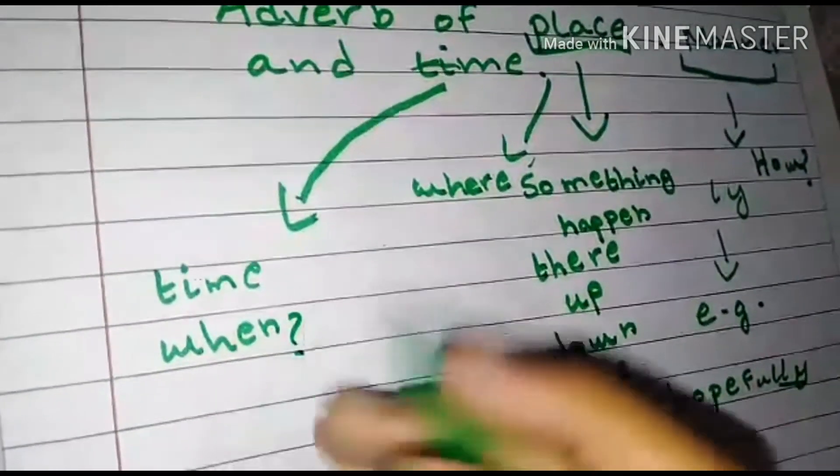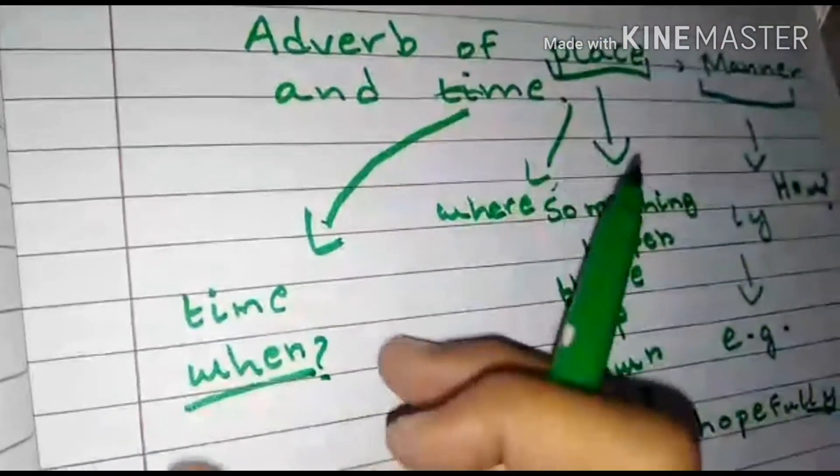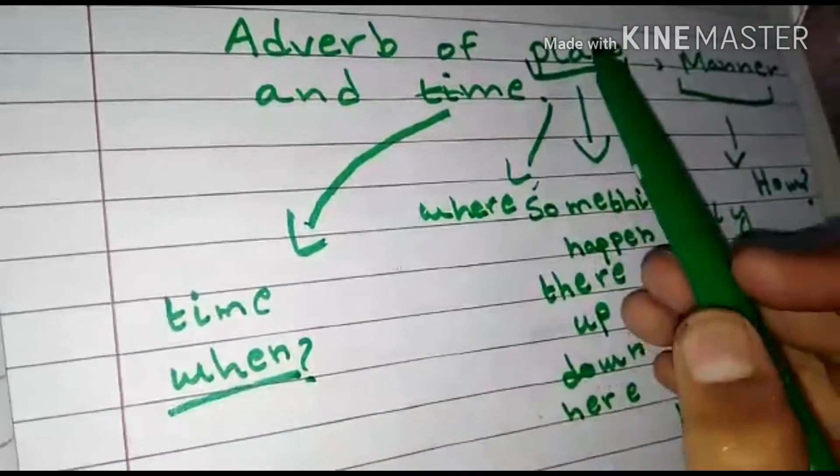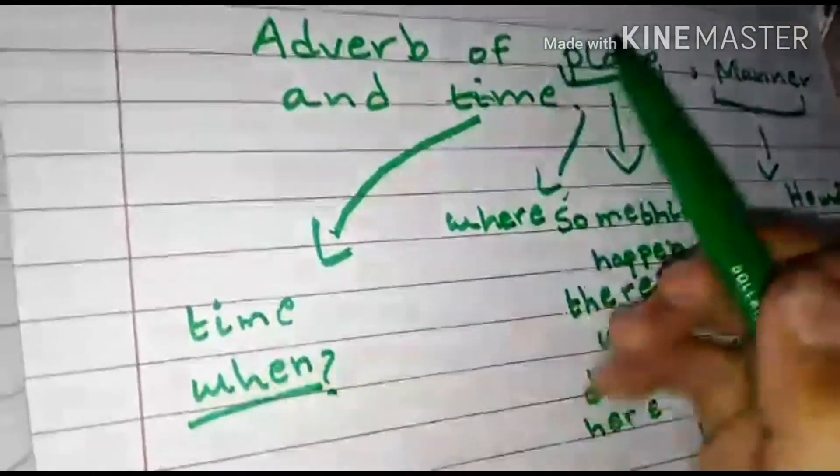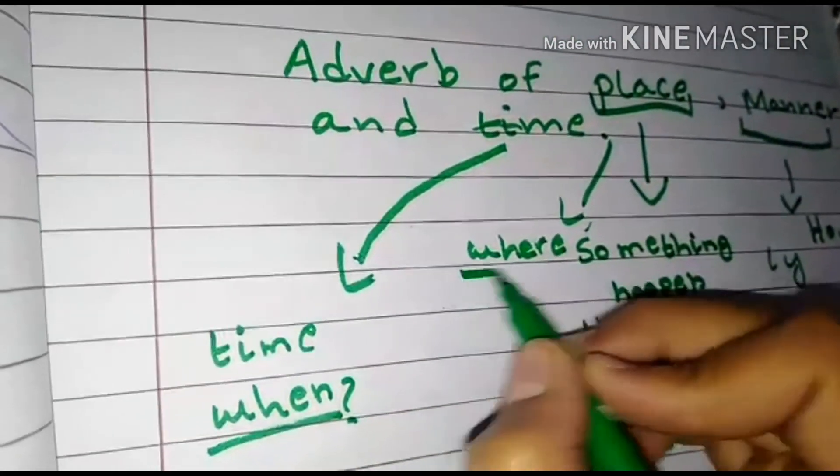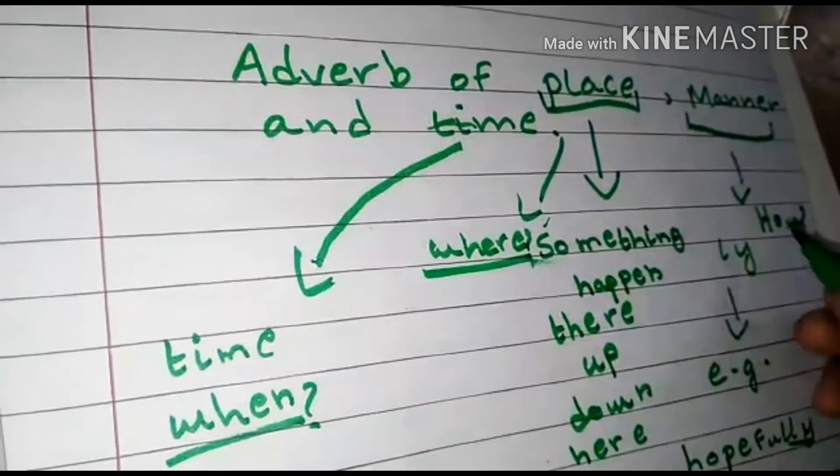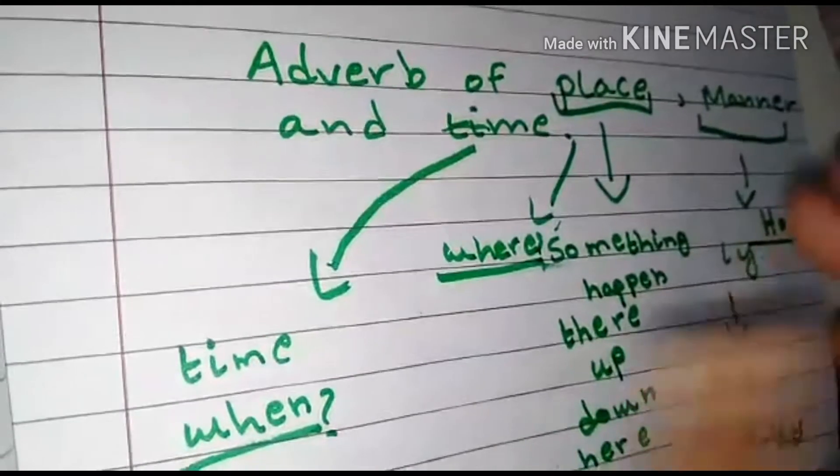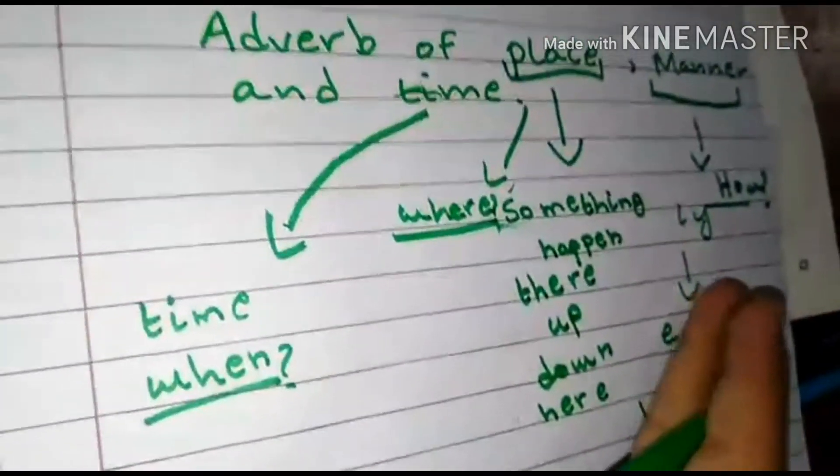So basically, friends, just have to remember: adverb of time answers the question when, adverb of place answers the question where, and adverb of manner answers the question how. So just remember these and I'm sure it will be really easy for you guys.